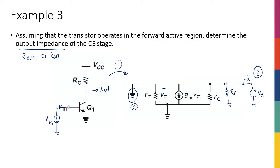It looks more complicated than Zin, but it turns out it's not. The key is Vπ — the voltage between the base node and the emitter node. But if you look carefully, both of those nodes are connected to ground. That means Vπ is equal to zero. Therefore, gm·Vπ is zero no matter what gm is — this current source will have zero current. A common mistake is that when people see a current source is zero, they make it a short circuit — that's absolutely wrong. Zero current means an open circuit.